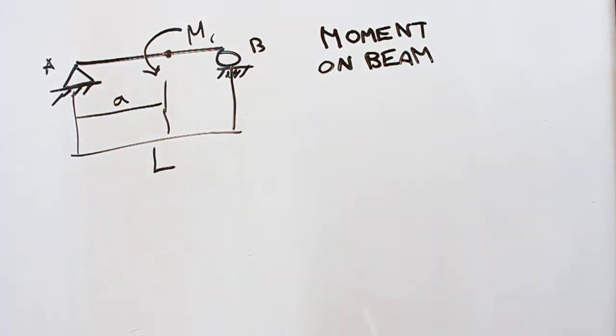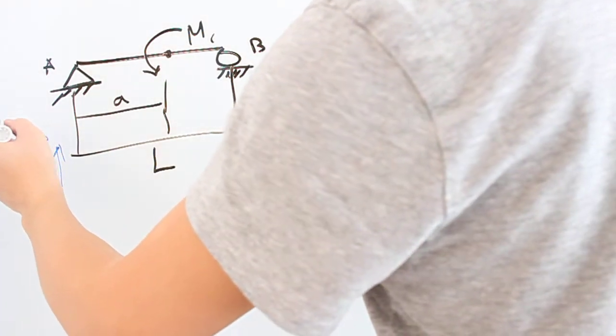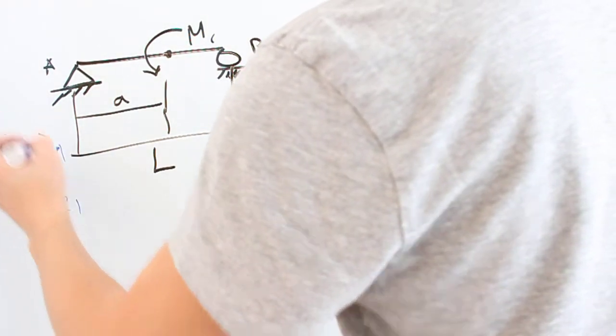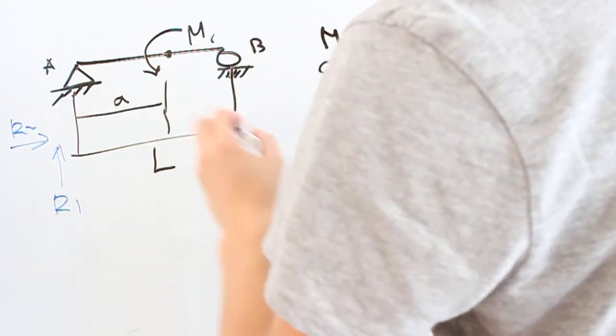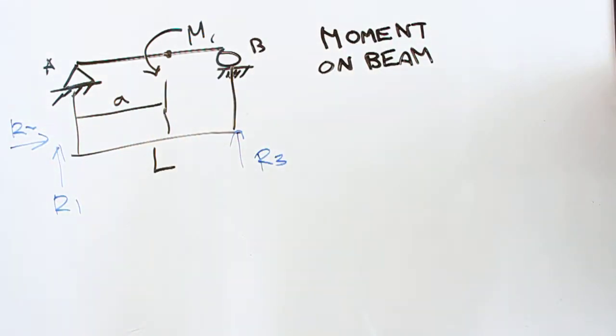So we've got to go through the same process. You find the reactionary forces. The pin gives you possibilities in the horizontal and vertical direction. The roller gives you possibilities only in the vertical direction, so we have three possible forces. And let's just start writing our equations.